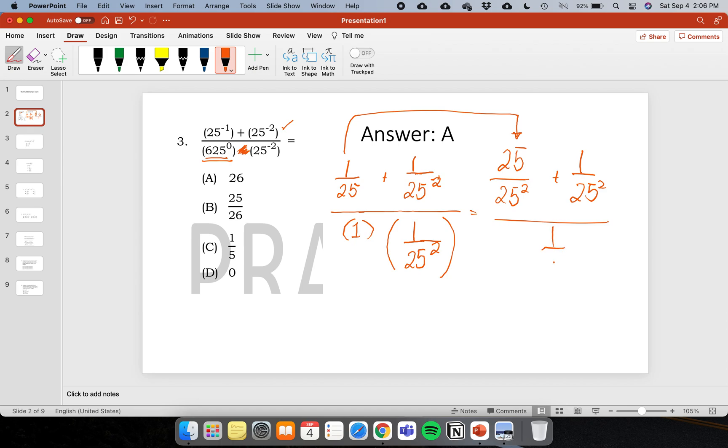Divided by one over 25 raised to two. Now I'll simplify it further. Plus one divided by 25 raised to two. One over 25 raised to two.